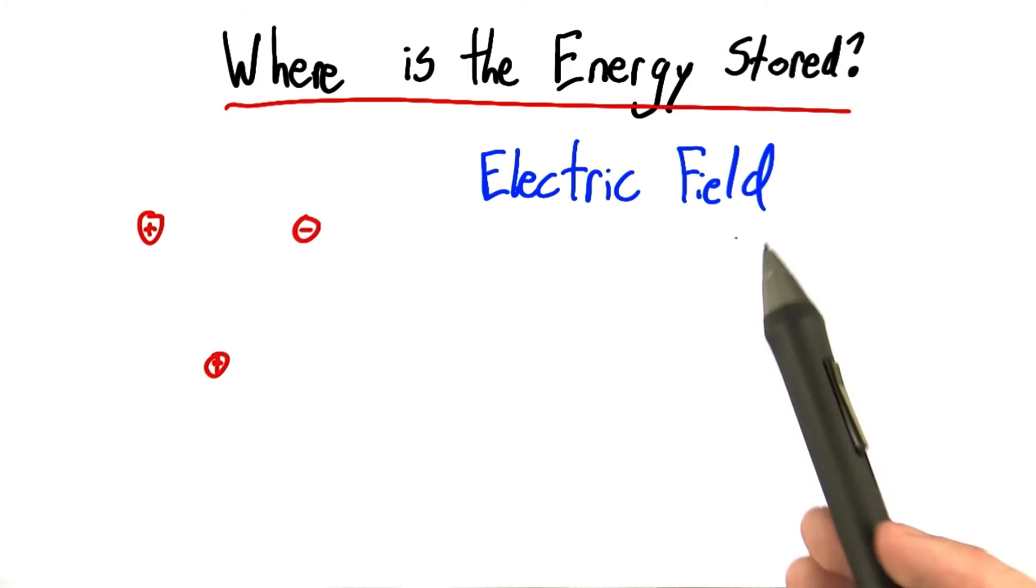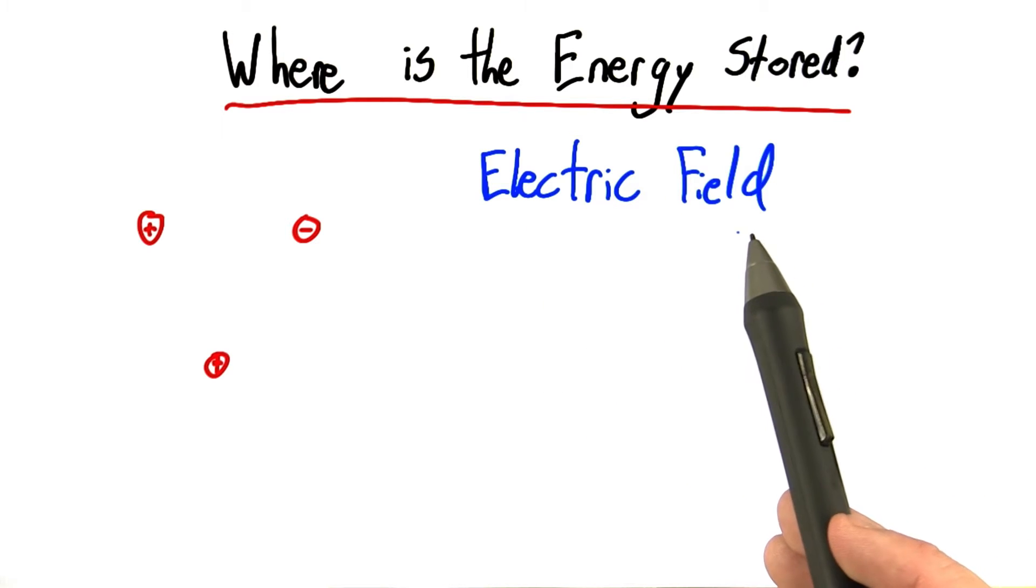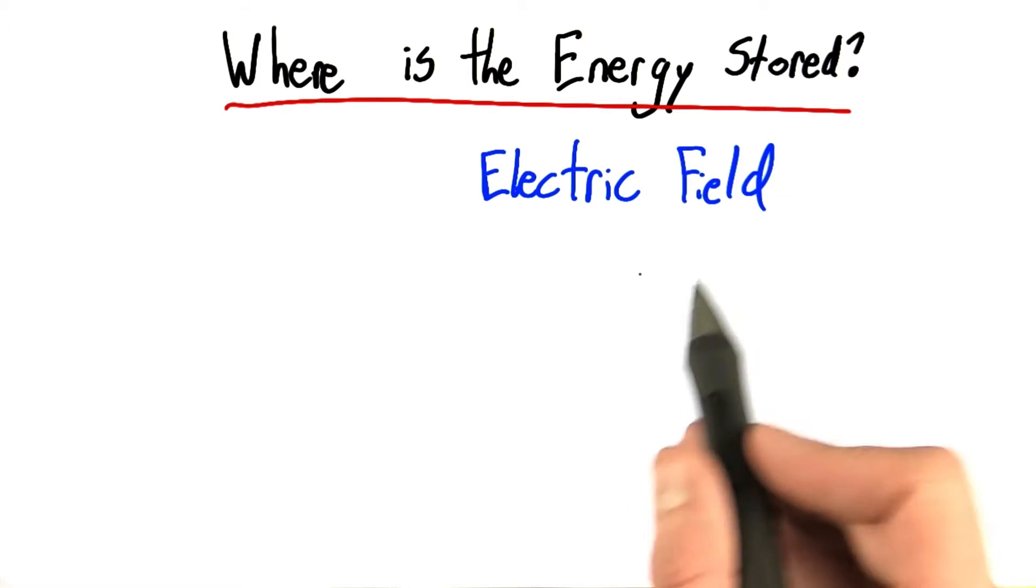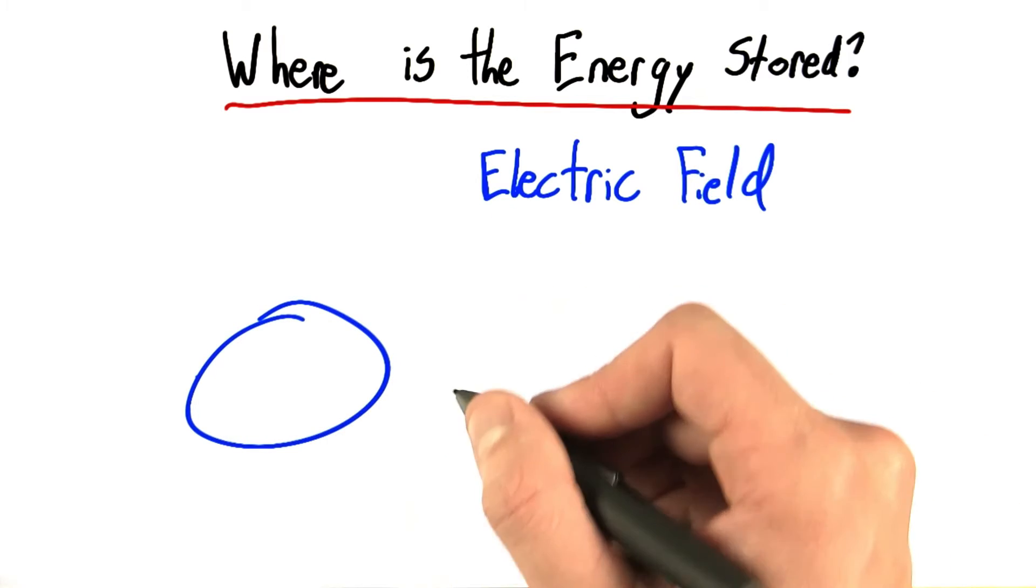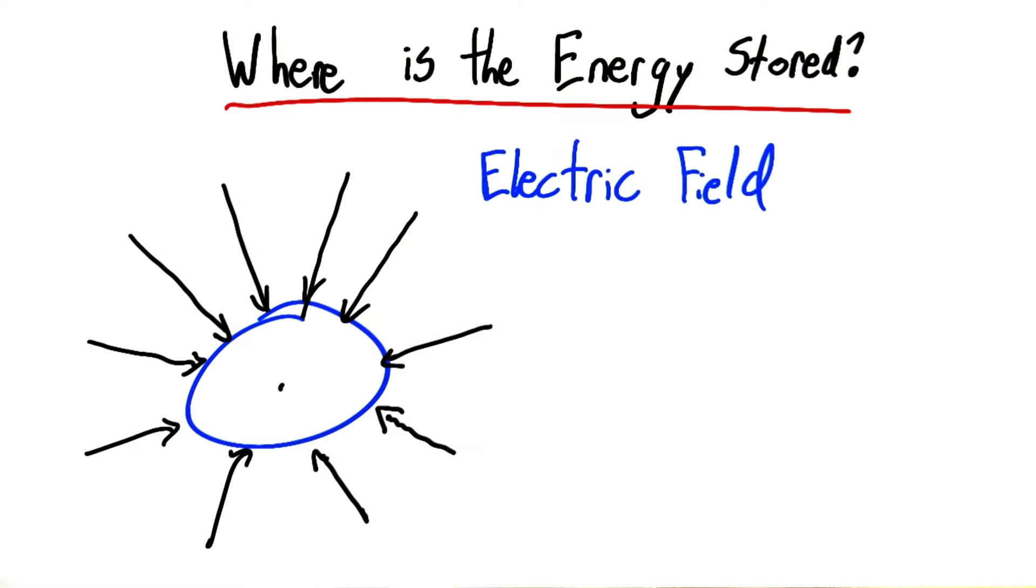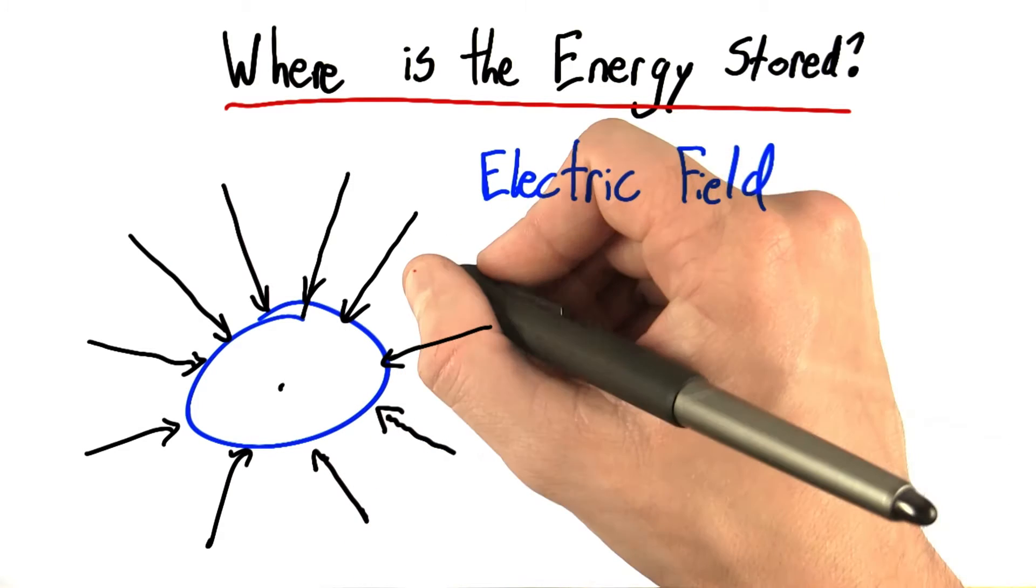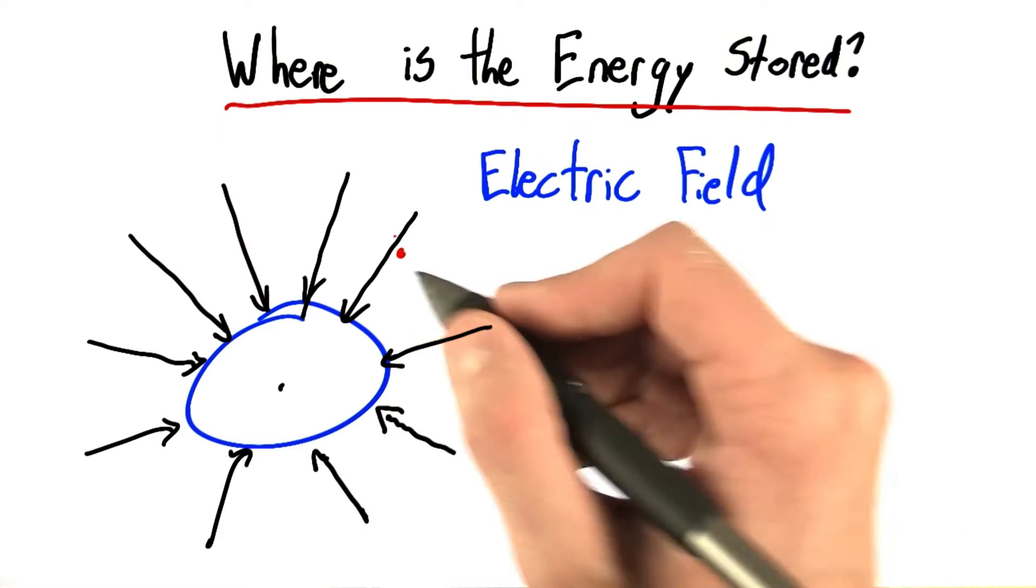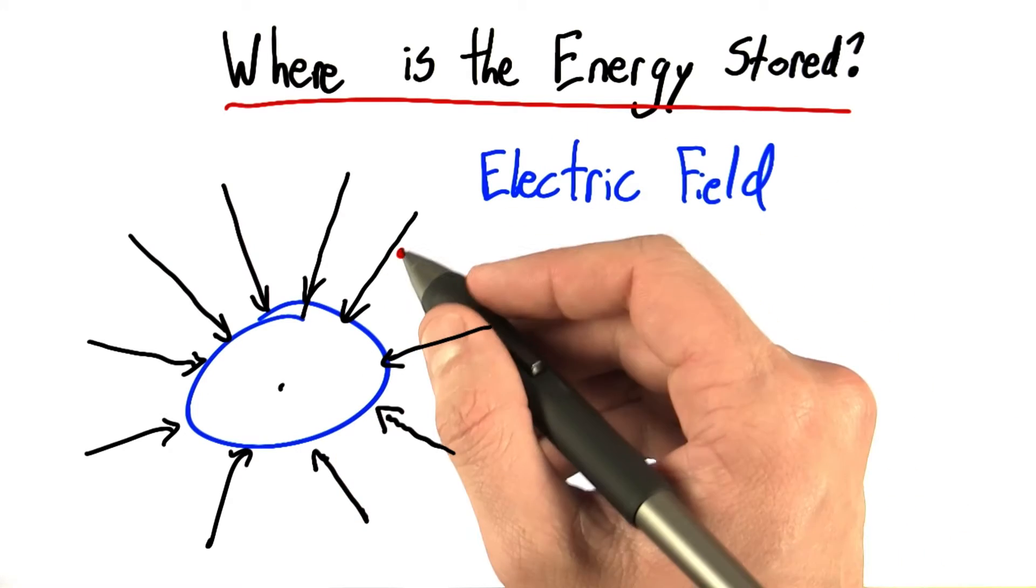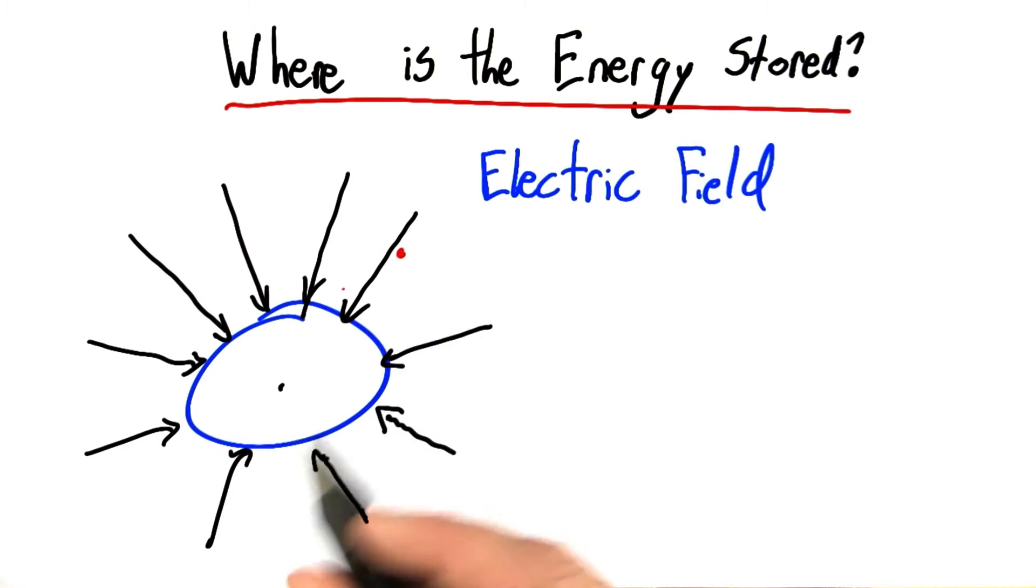Now the concept of a field is a strange one, so don't worry if this isn't intuitive at first. We actually could have talked about this concept of a field when we talked about gravity. So for example, if you look at the earth, we can draw these imaginary arrows pointed towards the center of the earth. And these arrows somehow indicate what will happen if I put a mass near them. So if I put a mass near this arrow, it will feel force in the direction that the arrow is pointing. These arrows are somehow representing the gravitational field.